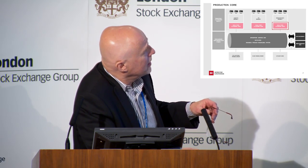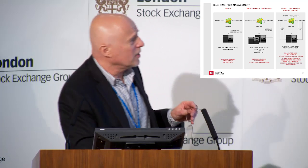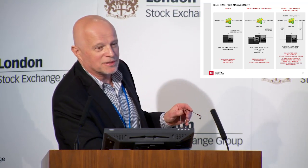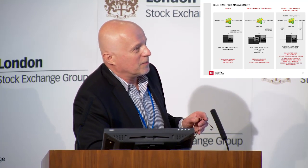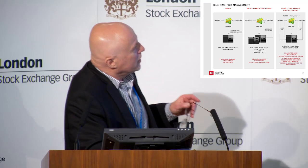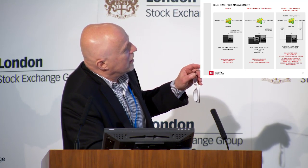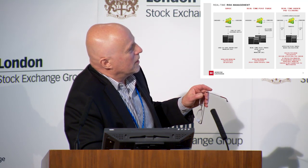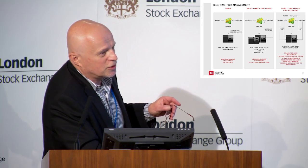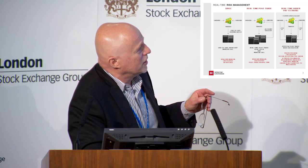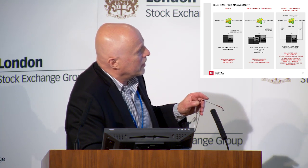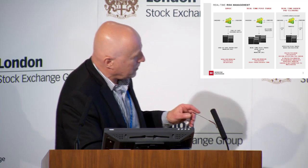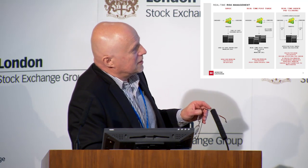I'll first tell you what we do and how it works, then say a few words about why we do it. Your typical exchange — I won't name names — works like this: orders come in, they get matched in a matching engine, you generate a trade, and one way or another it gets into end-of-day clearing. Sometimes you can speed up this process with a mini-batch, but there's really no connection back — it's only flowing one way. That could be a DTC-style model.